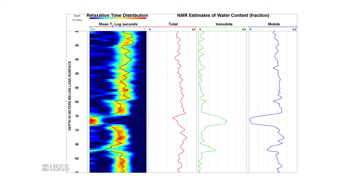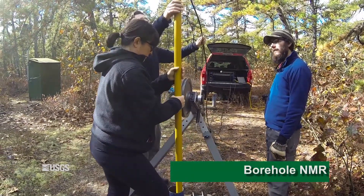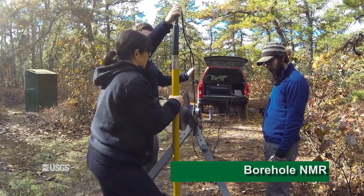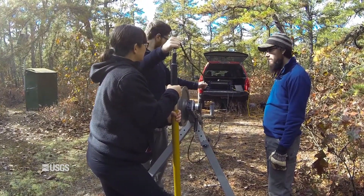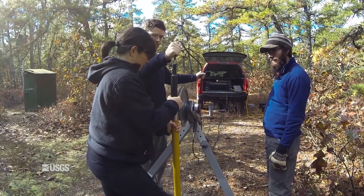Borehole NMR tools use these principles to generate logs presented in terms of water content and pore size distribution. Although borehole NMR can provide valuable site data, site conditions and other factors may limit its use. For example, because of the strong magnet, the tool cannot log in steel casings.